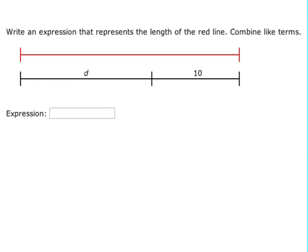In this video we're going to learn how to write variable expressions using diagrams. In this particular one we want to write an expression for the length of the red line. If we put the D together with the 10, we have D plus 10. That's all we have to do since there are no terms we can combine.